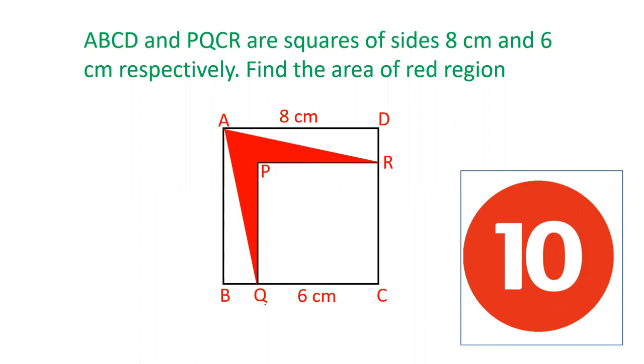A is joined to R. A is joined to Q. This is the region formed by joining AQ and AR. You have to find the area of this red region.